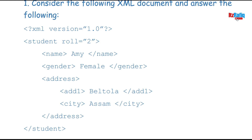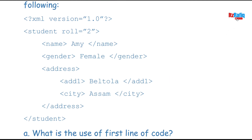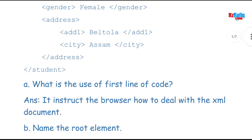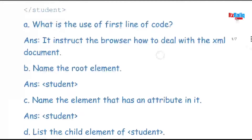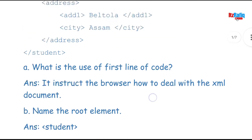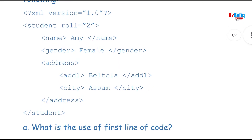After the equal sign, whatever is written within quotation marks is treated as a value. So student is the element, role is the attribute, and the value after the equals sign within quotes is the attribute value. If there is a space in the middle of what appears to be an element name, the word after the space is treated as an attribute.